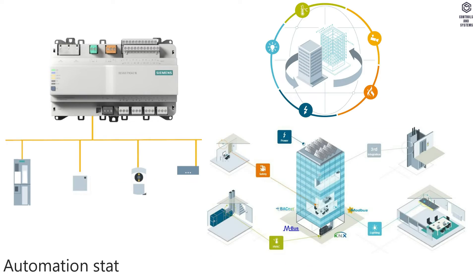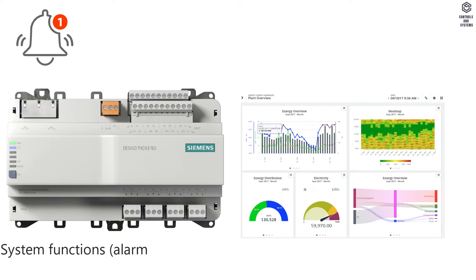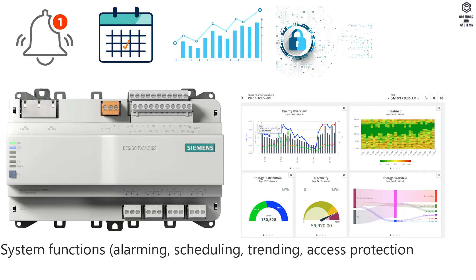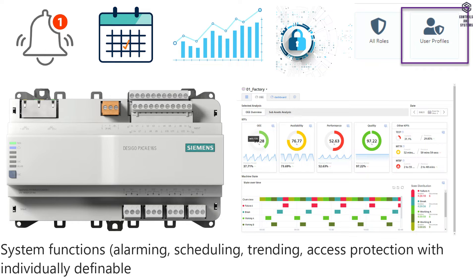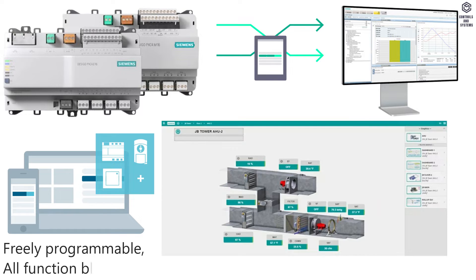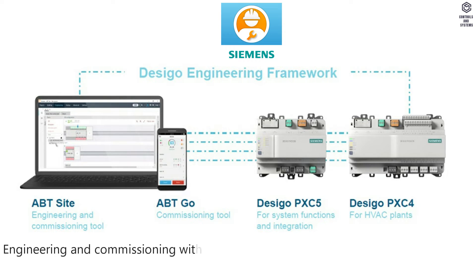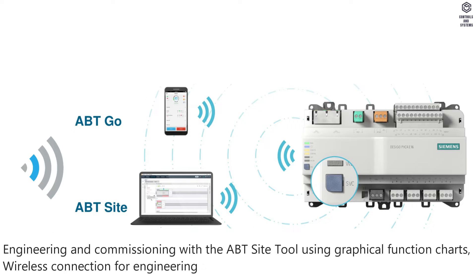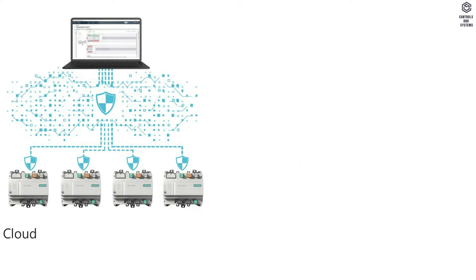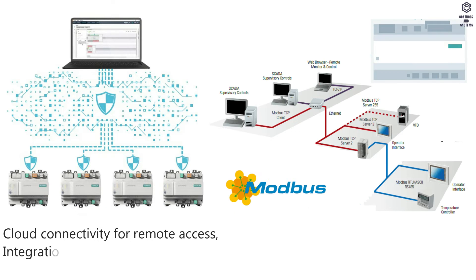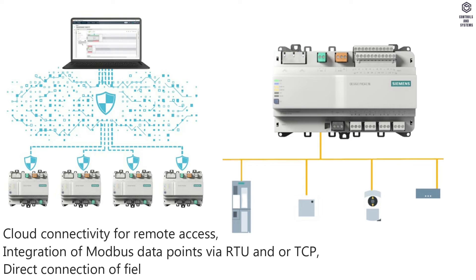Overview: Automation Stations for HVAC and Building Control Systems. System functions include Alarming, Scheduling, Trending, and Access Protection with individually definable user profiles and categories. The system is freely programmable with all function blocks available in libraries that can be graphically connected. Engineering and commissioning use the ABT side tool with graphical function charts, wireless connection, and cloud connectivity for remote access. Integration of Modbus data points via RTU and/or TCP, with direct connection of field devices.